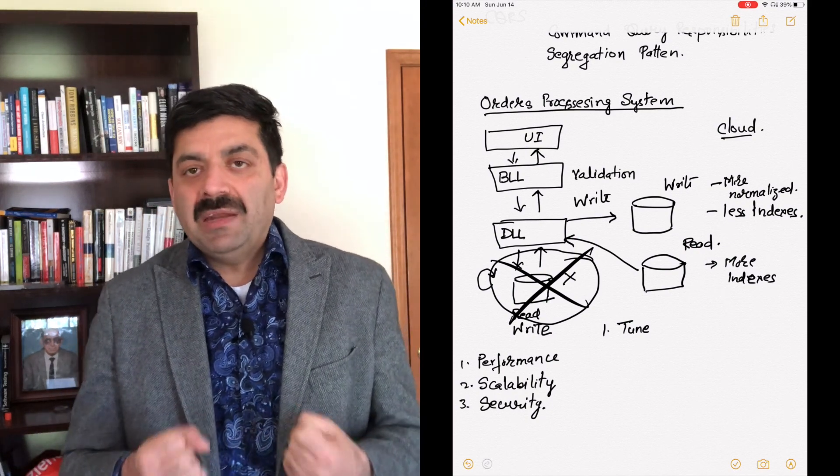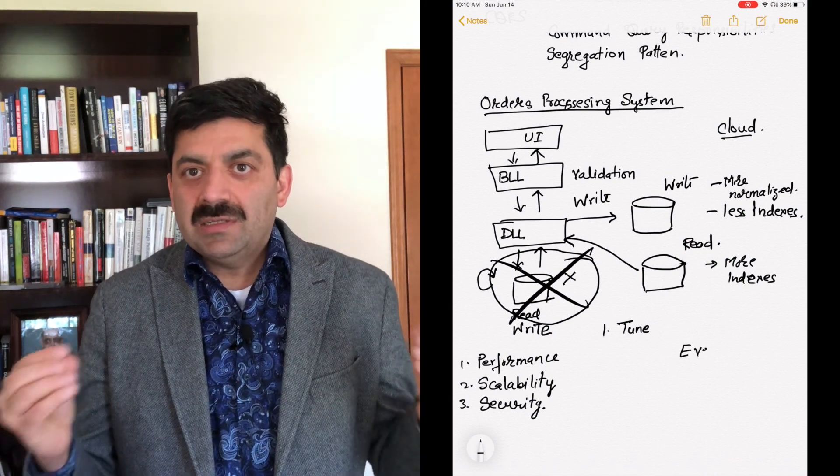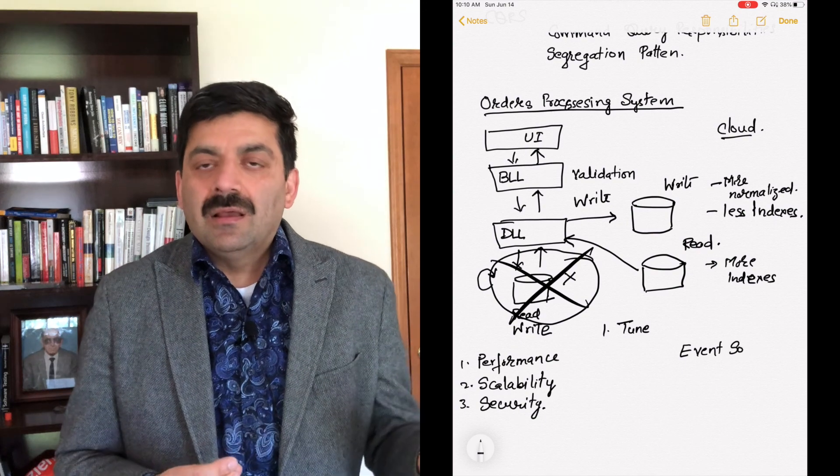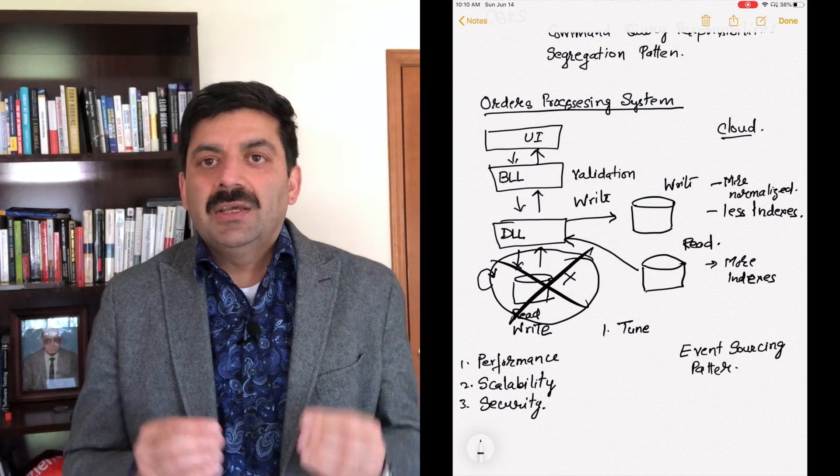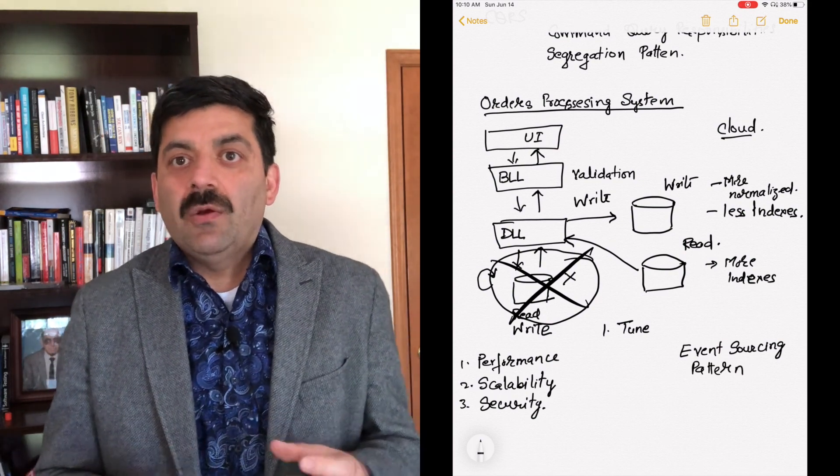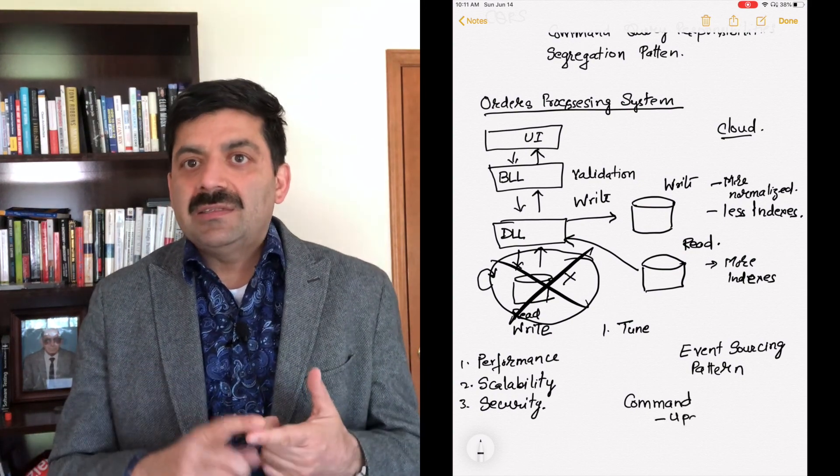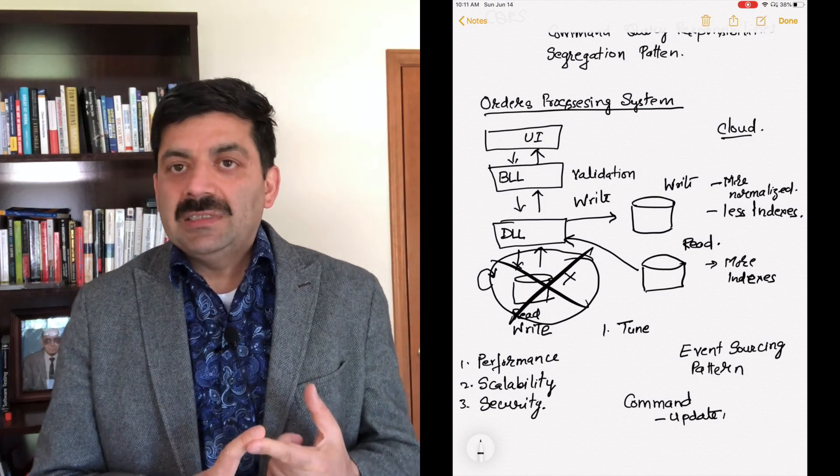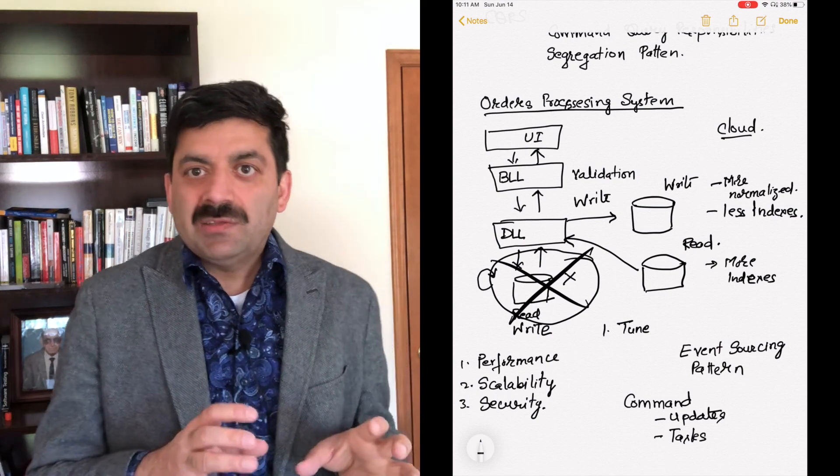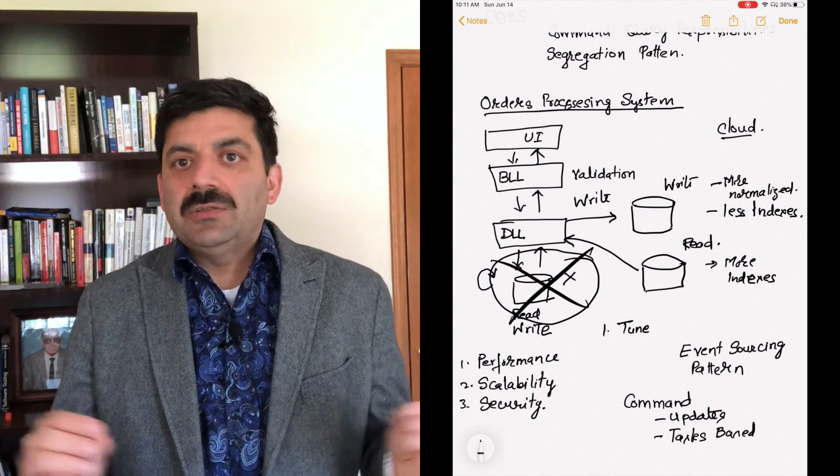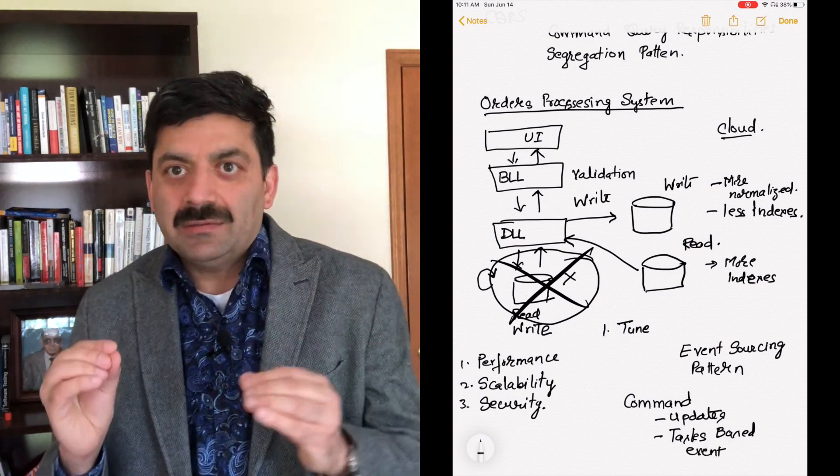So here comes CQRS design pattern. When you are writing to the database, you need to have very few indexes. You want to have a very normalized database. Because when you are saving orders, consistency, reliability, and accuracy is very very important. And you want to make sure you have a normalized database so that you are not updating too many fields. The order is right, you have the right address, you have the right amount.